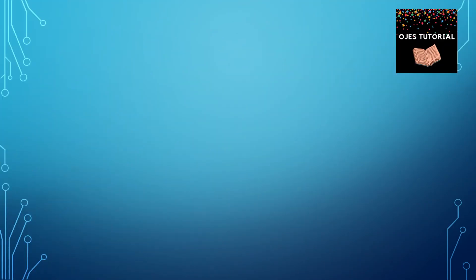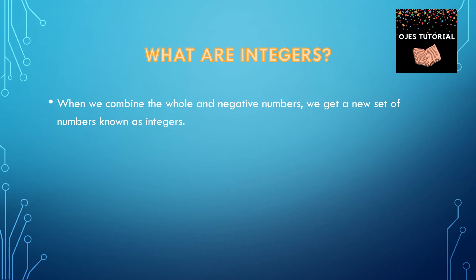Now, after learning these things, let's learn the definition of integers. When we combine whole numbers and negative numbers, we get a new set of numbers known as integers. So, when we combine both these sets of numbers, we get integers.